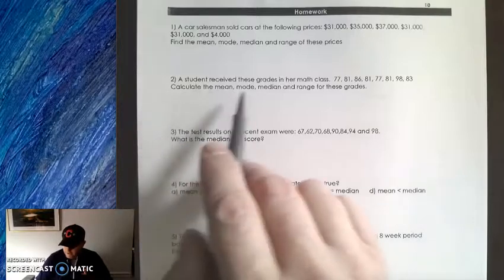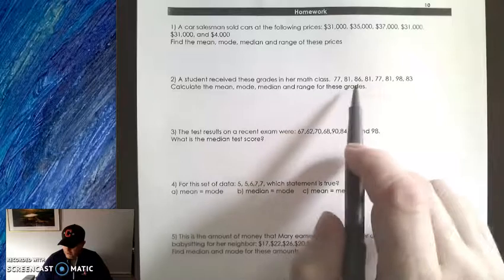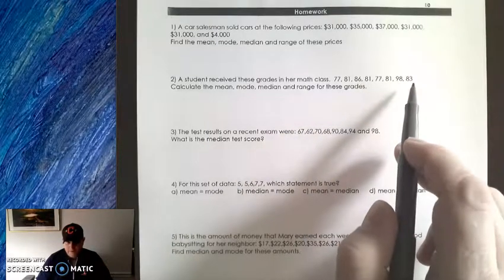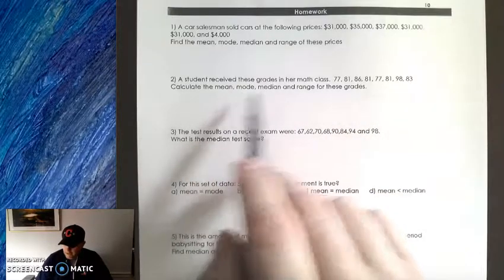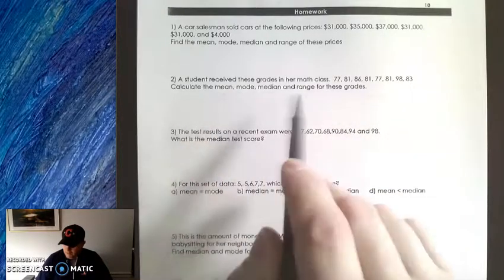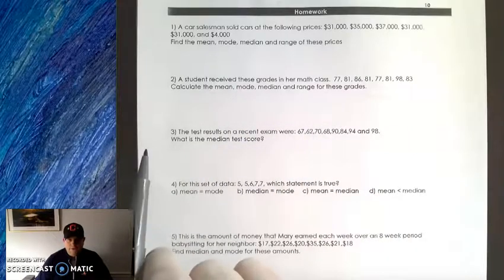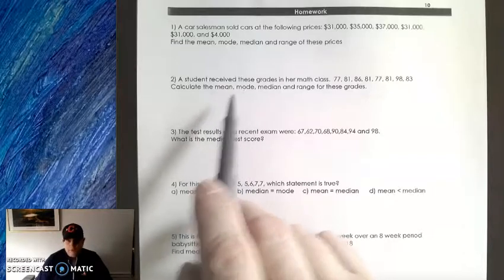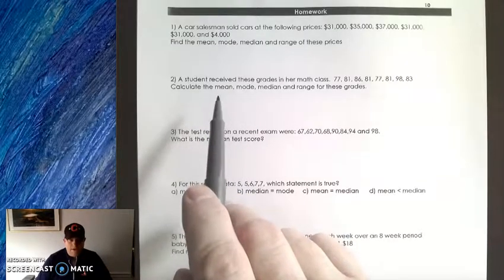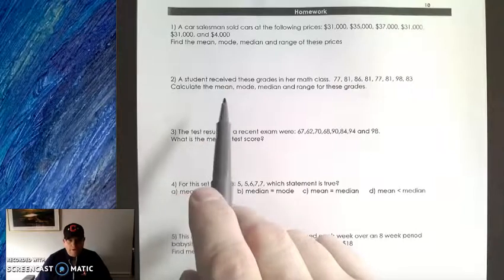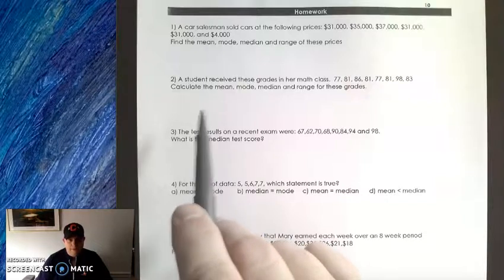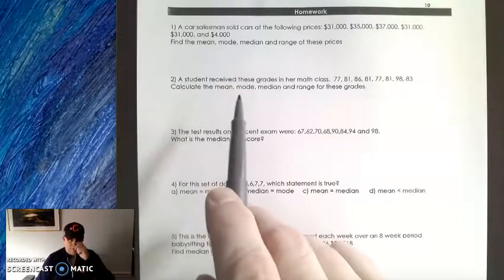A student received these grades in their math class: 77, 81, 86, 81, 77, 81, 98, 83. Calculate the mean, mode, and median, and the range of these grades. Let's go over these definitions really quickly. The mean is the average, so we find the average by adding up all the numbers and then dividing by the number of elements.